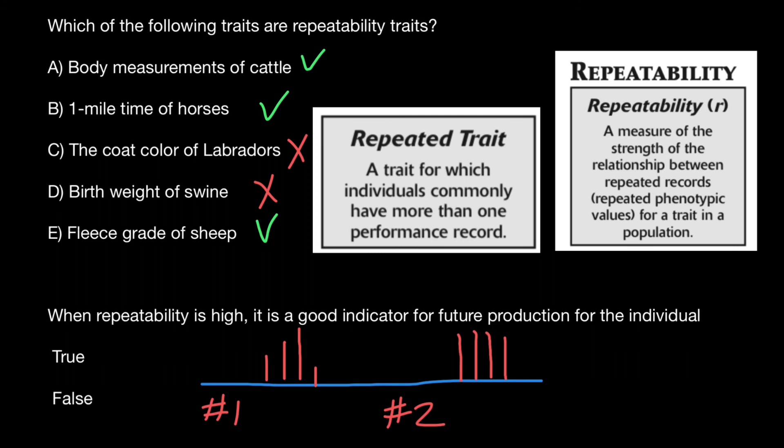The performance of cow number one is also good and above the average of the population. So when repeatability is higher, it is a good indicator for the future production of the individual. Yes, it is true.